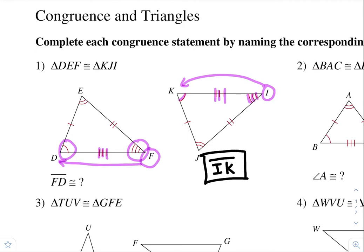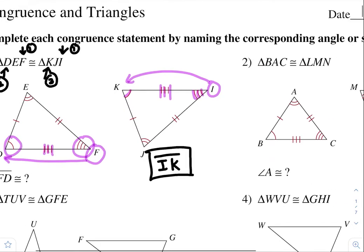Another way you guys could do this: remember, line segment FD — it started here and then went to here, right? It should go to the same thing for this triangle. Starts here, ends here: IK. So those are the two ways you guys could have done that one.